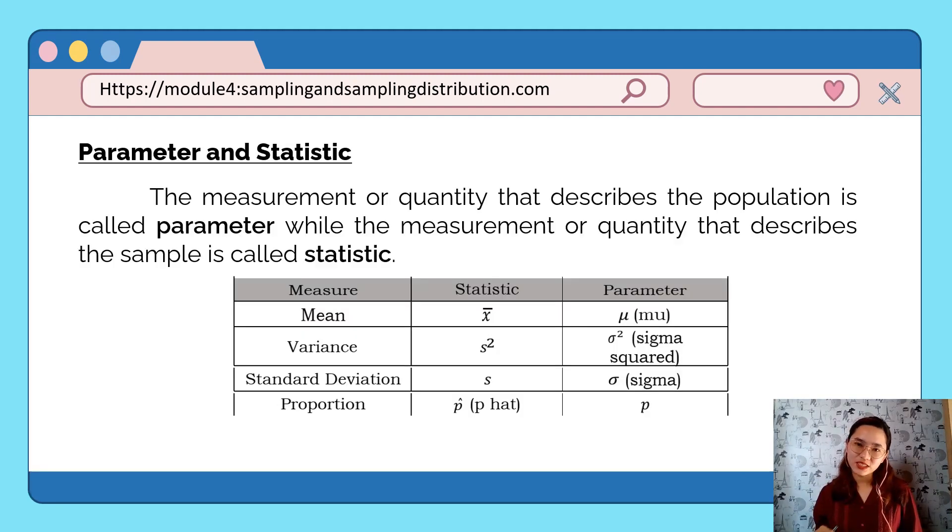The parameter or quantity that describes the population is what we call the parameter, while the measurement or quantity that describes the sample is called the statistic. So let's look at our table showing commonly used notation in describing population and sample.